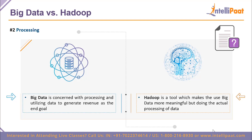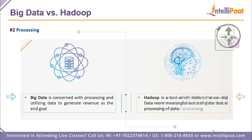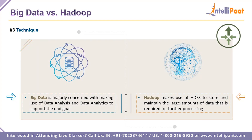In terms of processing: big data is concerned with processing and utilizing data as a goal to ensure revenue is generated. Hadoop is a tool that makes use of big data concepts in a more meaningful way by actually processing the data. So big data is concerned with processing data and generating revenue, while Hadoop is the tool that makes sure big data can be processed — using techniques like the Hadoop Distributed File System (HDFS) to maintain and store data.